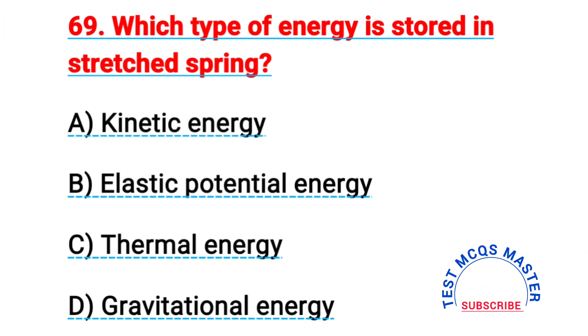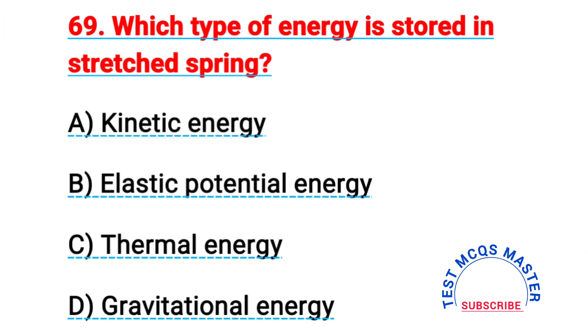Question number sixty-nine: which type of energy is stored in a stretched spring? The right answer is B, elastic potential energy.